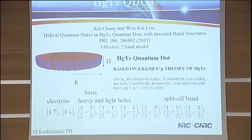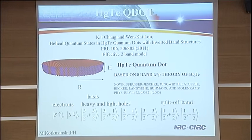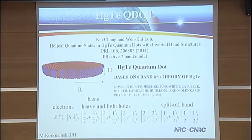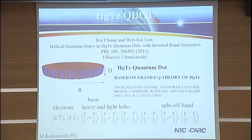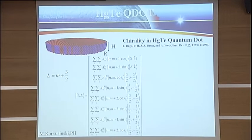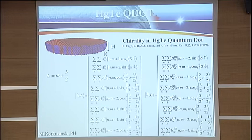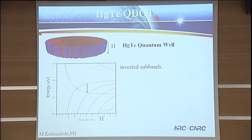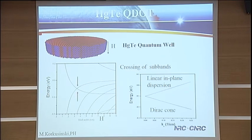Now we move to a mercury telluride quantum dot. There is a nice paper by Kai Chang on these dots using an effective two-band model. We want to make sure this is real and understand its essence. This is based on an eight-band K·P theory, and in addition to heavy and light holes, we add electrons and the split-off band. So again, we have chirality. There is a chirality state and another chirality state with a different order of parity operators. If we calculate the sub-bands as a function of height, we can be in the inverted regime here, and in the normal regime for narrow dots — inverted for wider ones. At the crossing point we have a Dirac cone for the dispersion in the plane.